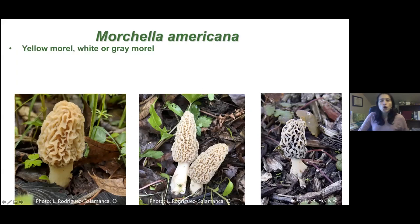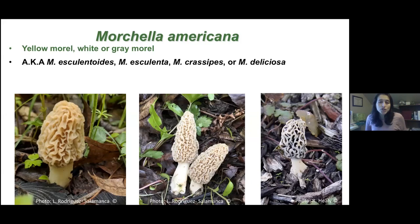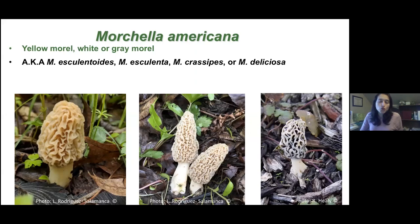Morchella americana — its nicknames are yellow morel, white morel, or gray morel. It used to be called different species names: Morchella esculentoides, Morchella esculenta, Morchella cracipes, or Morchella deliciosa. These species were lumped together when mycologists used DNA technology — similar to ancestry DNA testing — to compare them, and they realized they were all the same species, reclassified as Morchella americana.